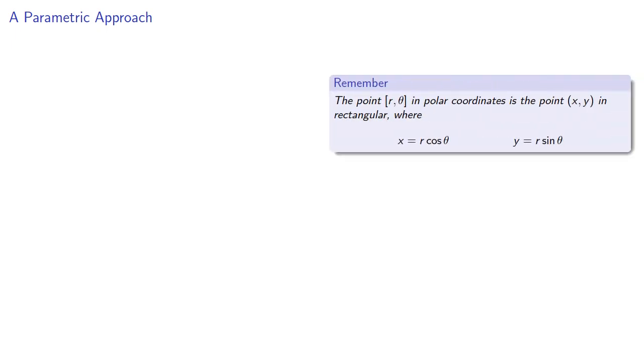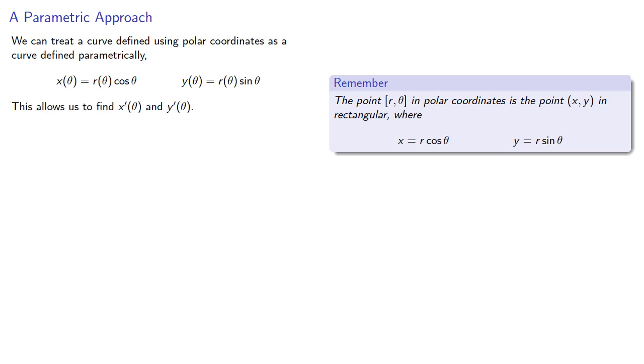So let's try a parametric approach. Remember the point r theta in polar coordinates is the point x y in rectangular where x is r cosine theta and y is r sine theta. We can treat a curve defined using polar coordinates as a curve defined parametrically: x of theta is r of theta cosine theta and y of theta is r of theta sine theta. This allows us to find the derivatives of x and y with respect to theta.